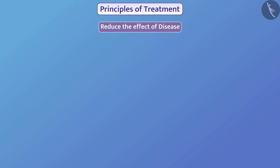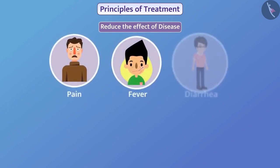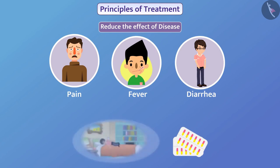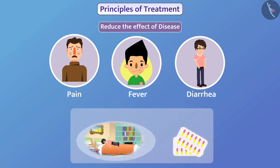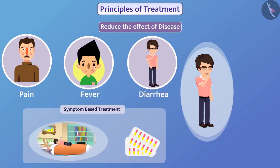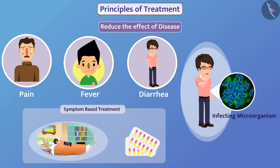For the treatment of diseases like pain, fever, and diarrhea, doctors give medicines to the patient which reduce the effects, i.e., symptoms of the disease. Adequate rest also reduces some symptoms. Treatment that reduces the effects of the disease is called symptom-based treatment. Symptom-based treatment gives comfort to the patient, but does not eliminate the cause of the disease — the infecting microorganisms. Therefore, the disease does not cure completely.